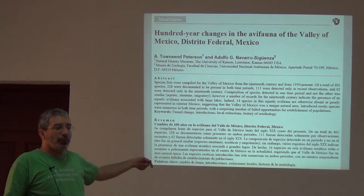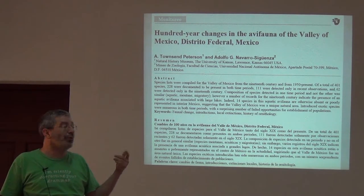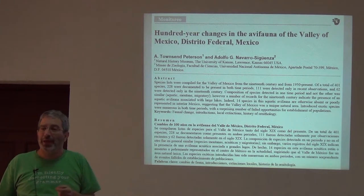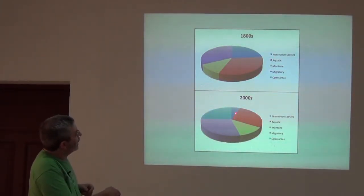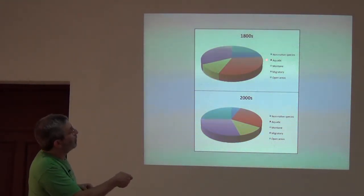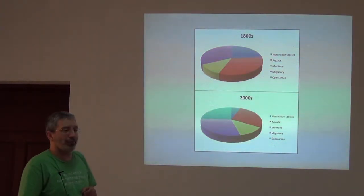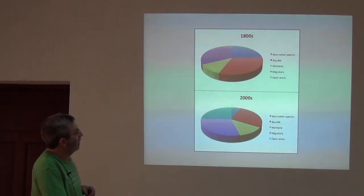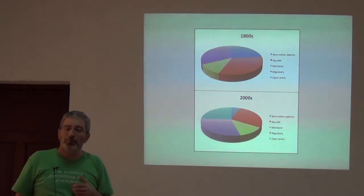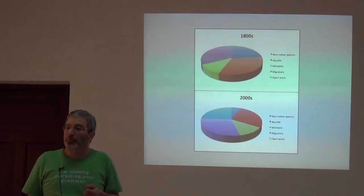We've mirrored those landscape changes with analyses — thanks to those early scientific journals — of change in the avifauna over 100 years. Non-native species are these, and there were actually more non-native species reported from the Valley of Mexico in the 1800s than in the 2000s. We see this aquatic component declining rather substantively, and we also see the migratory component expanding somewhat — that's mainly thinking about changes in birding intensity, with more observers paying more attention.